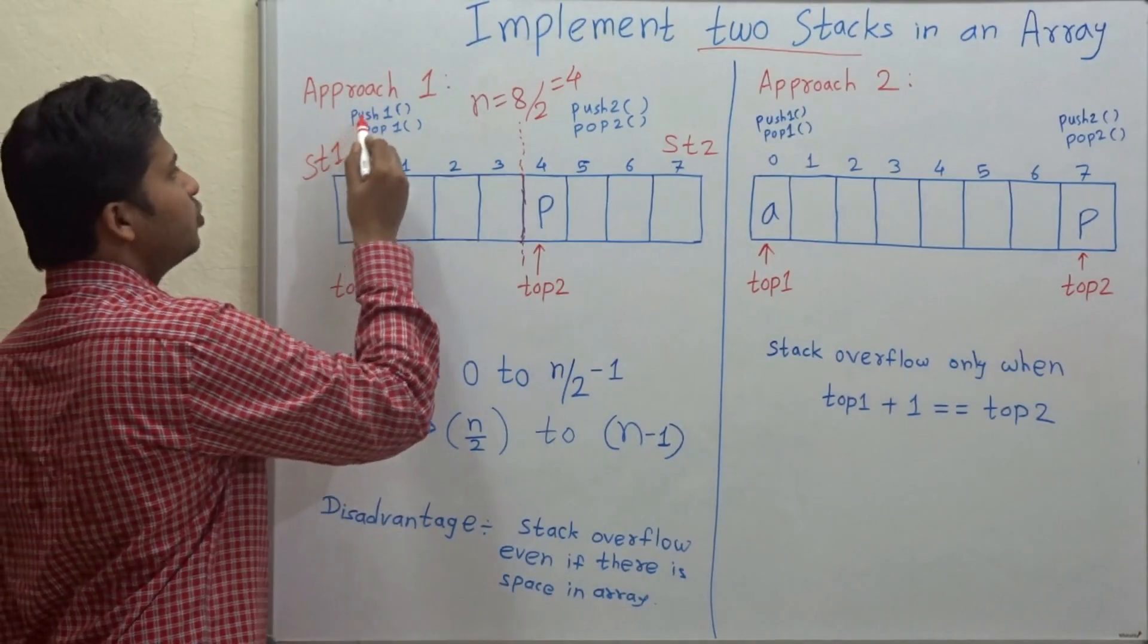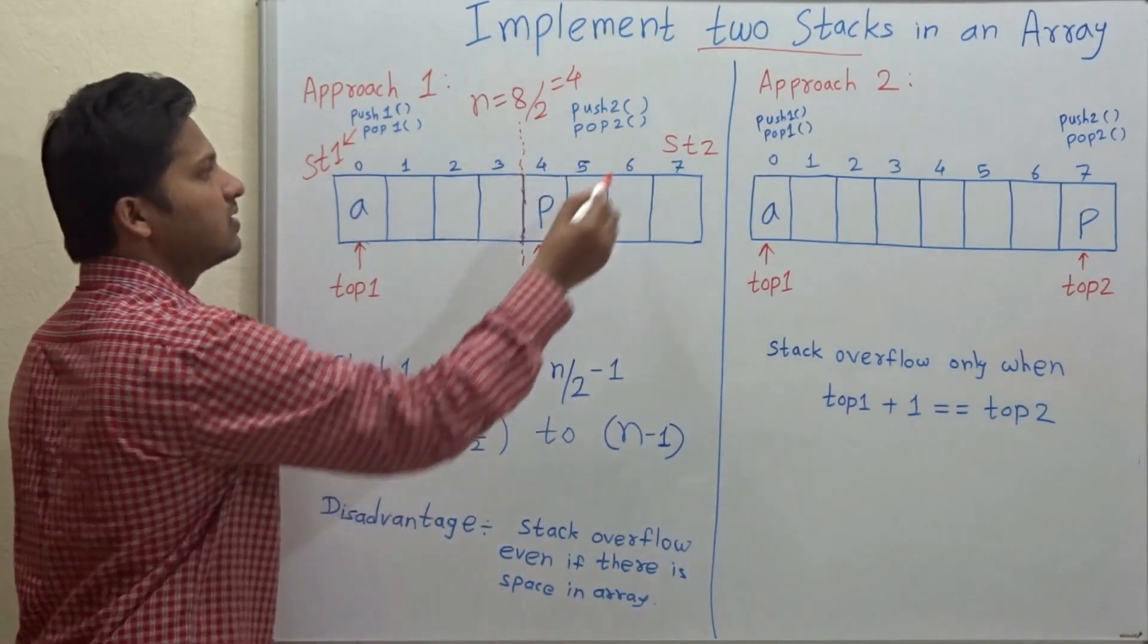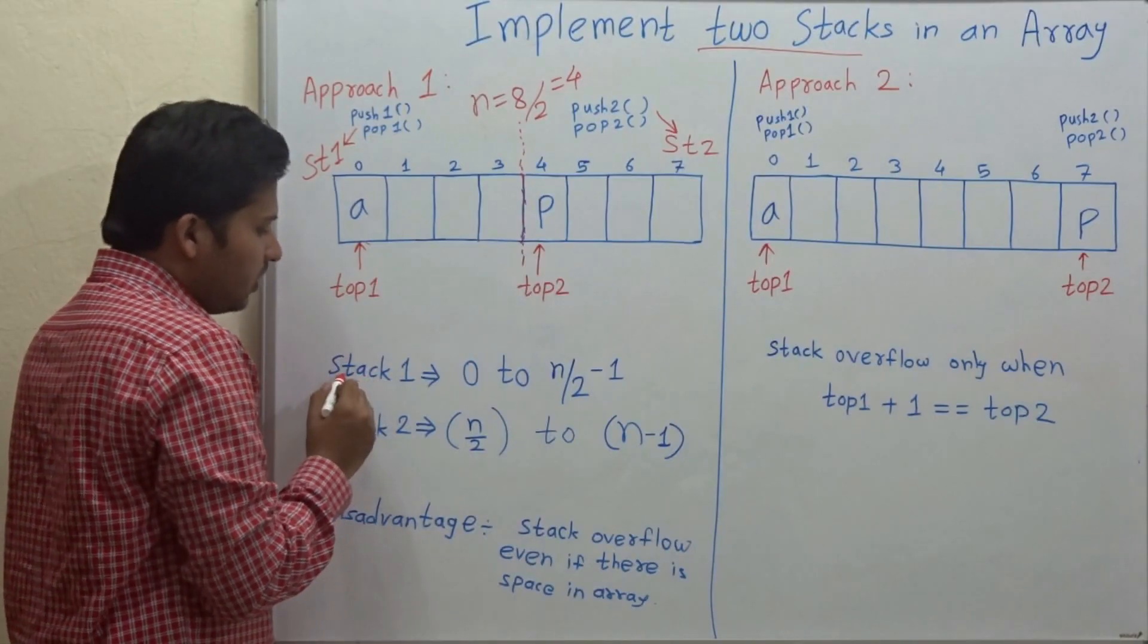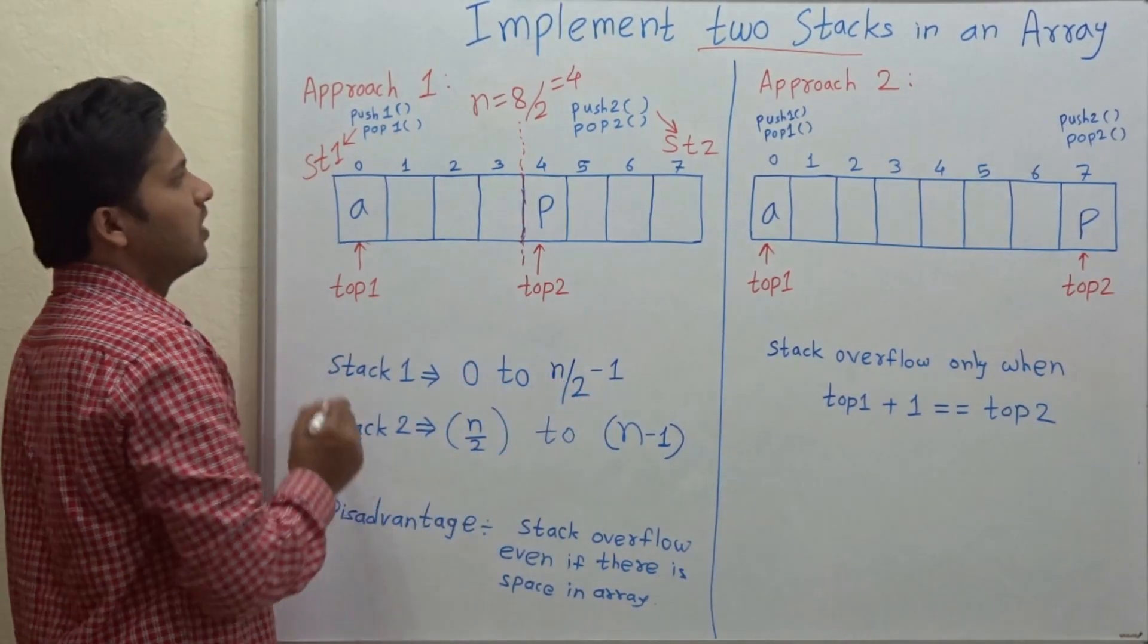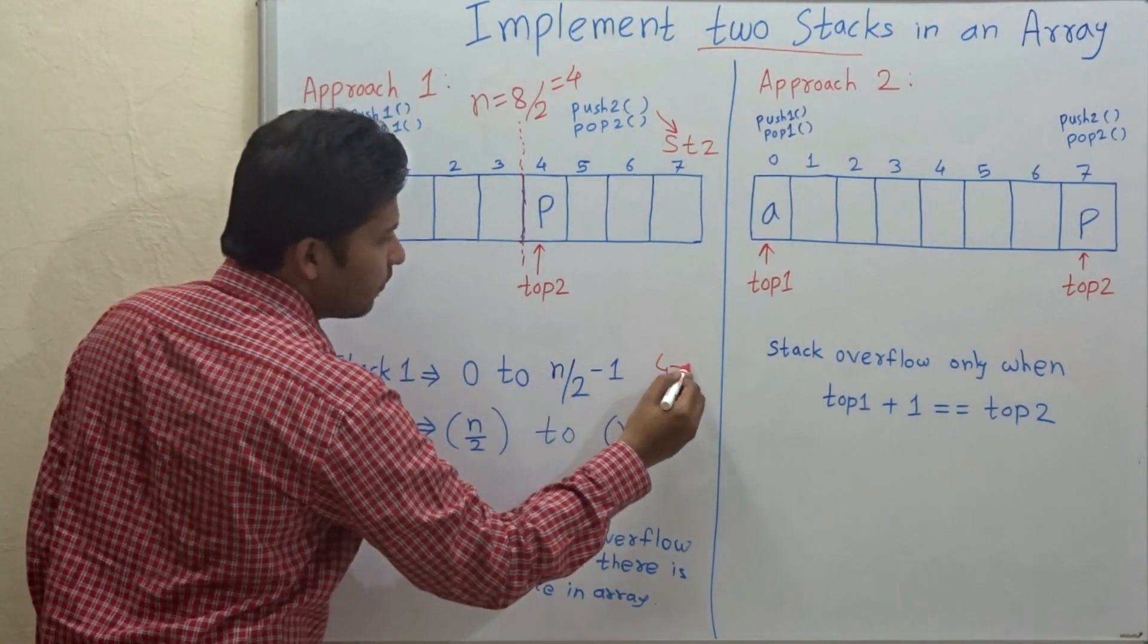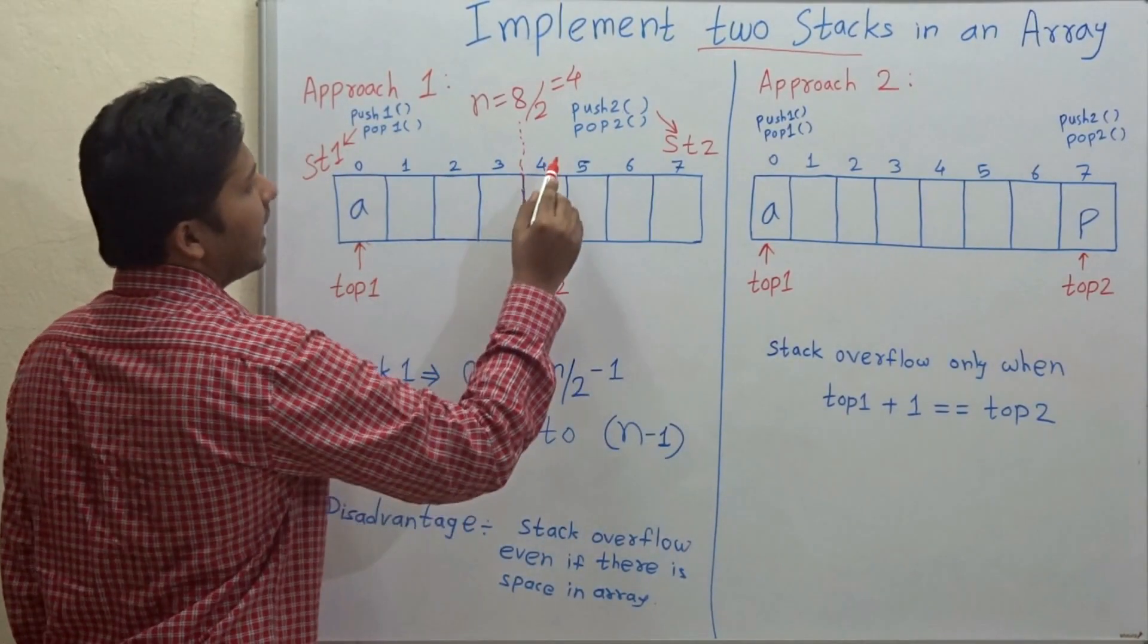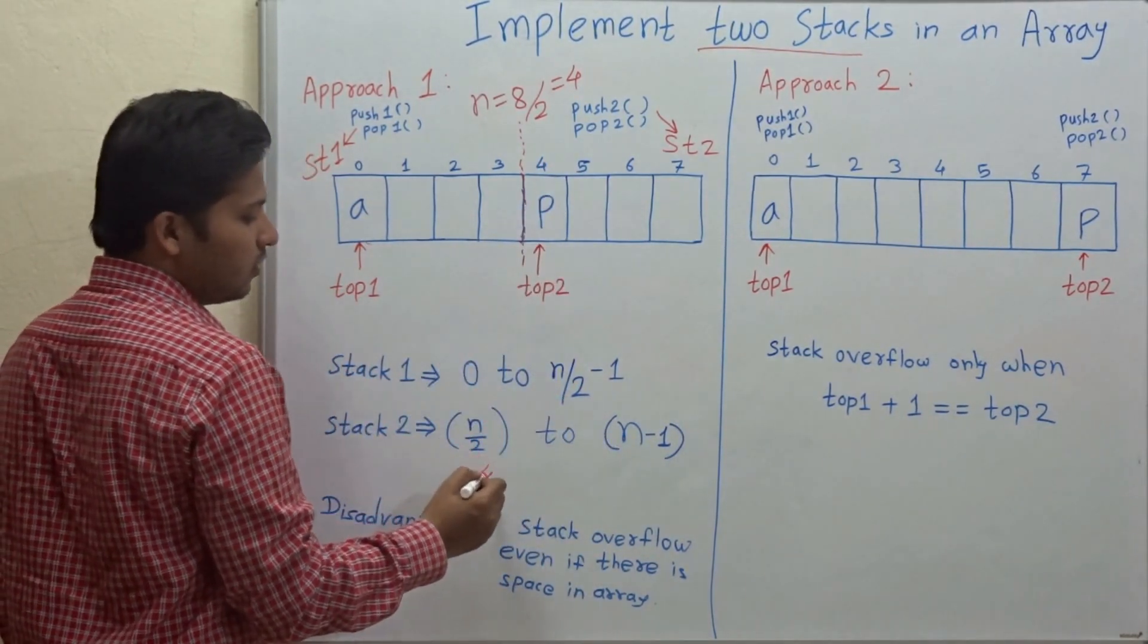For the first part, push 1 and pop 1 are the operations. And for the second part, push 2 and pop 2 are the operations for stack 2. Now, let's see the size of the stack. So stack 1 extends from 0 to n by 2 minus 1. So here, it goes from 0 to 3. As n by 2 is 4, 4 minus 1 is 3. So it will go from 0 to 3. Now, from 0 to 3 is stack 1 and from n by 2 to n minus 1, that is 4 to 7.